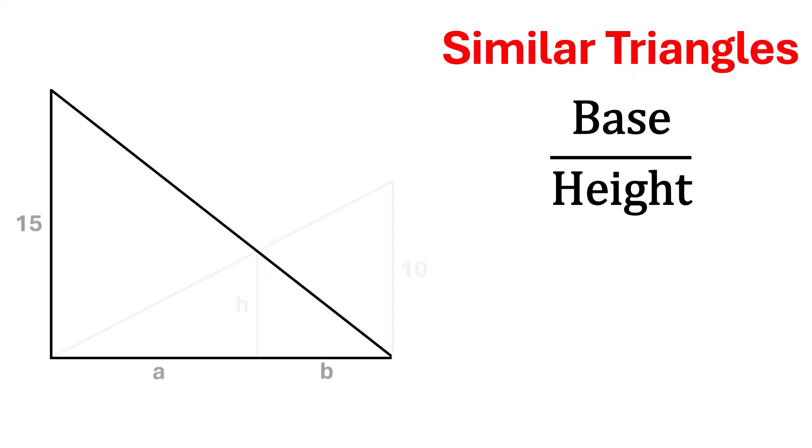This means the ratio of base to height in the larger triangle is A plus B over 15. And in the smaller triangle, the ratio is B over H. Since the triangles are similar, these two ratios must be equal.